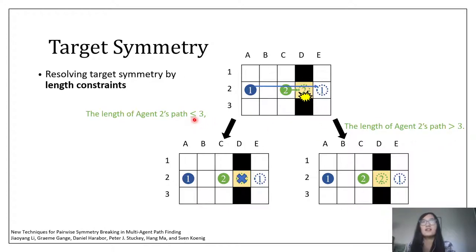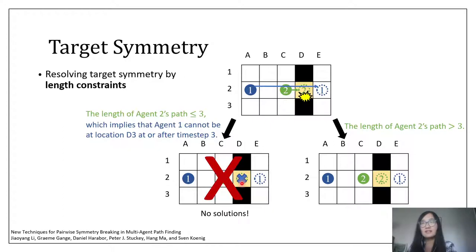In the first case, if the path length of agent 2 is no larger than 3, then agent 2 has to stay at its goal location at and after time step 3, which implies that agent 1 cannot be at this location at and after time step 3. So we have this constraint for agent 1 that's blocking this location starting from time step 3. Then we can realize that in this case, there's no path for agent 1 to reach its goal location, so we can prune this node. And in the right child node, the path of agent 2 should contain at least four time steps. Therefore, we can find a collision-free path for agent 2 directly, and the symmetries are resolved directly.